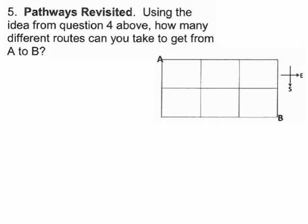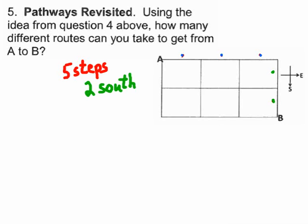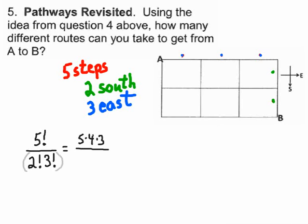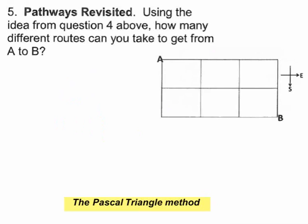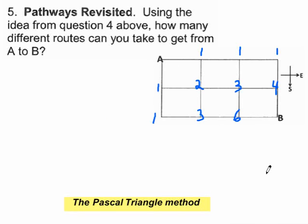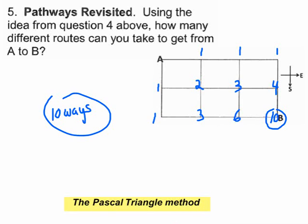Let's see how that applies to pathways. From the previous question: how many different routes does it take to go from A to B? You take five steps, three to the east and two to the south. Using the formula: five factorial over three factorial times two factorial gives ten. Let's verify with Pascal's triangle on its side: one, one, one, two, three, four, three, six, ten. That's exactly ten — the same as the formula.